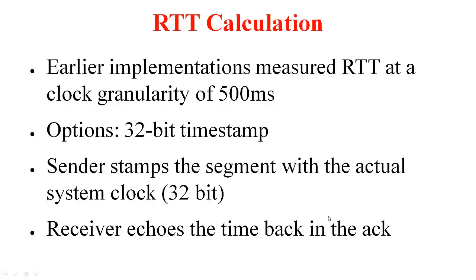We were talking about the timestamp option available as part of the TCP headers. Why did this arise? The earlier implementations used to measure round trip time at a clock granularity of 500 milliseconds. This is because the timer implementation on those systems did not provide any better resolution. So if your round trip time is just 50 milliseconds, it was still measured as 500 milliseconds. The timeout is a function of the round trip time, so it was also turning out to be a multiple of 500 milliseconds.